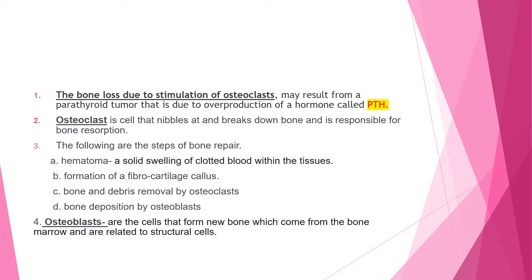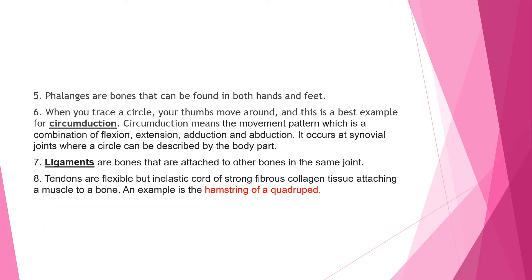This is a really good review because one of these terms may come out in your TEAS exam. The TEAS exam has at least four different types, and you are not really guaranteed which type will show up. Number five: phalanges are bones that can be found in both hands and feet. Do not confuse — if a choice says just hands or just feet, it is wrong, because phalanges are found in both.